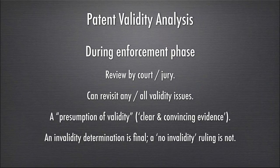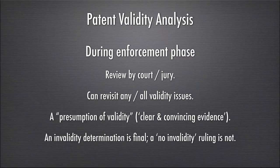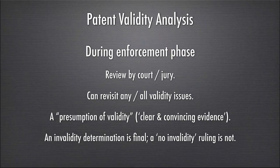The examiner will conduct a search to determine whether there's prior art relevant to the subject matter, review the specification to make sure the disclosure requirements are satisfied, and verify that the application complies with formal aspects. During the enforcement phase, once the patent is granted, a judge and sometimes a jury will be reviewing the same things. All validity issues are still live at that time. The difference is that once a patent is issued there's a presumption of validity, meaning you must show invalidity by clear and convincing evidence — a higher standard than preponderance of the evidence.